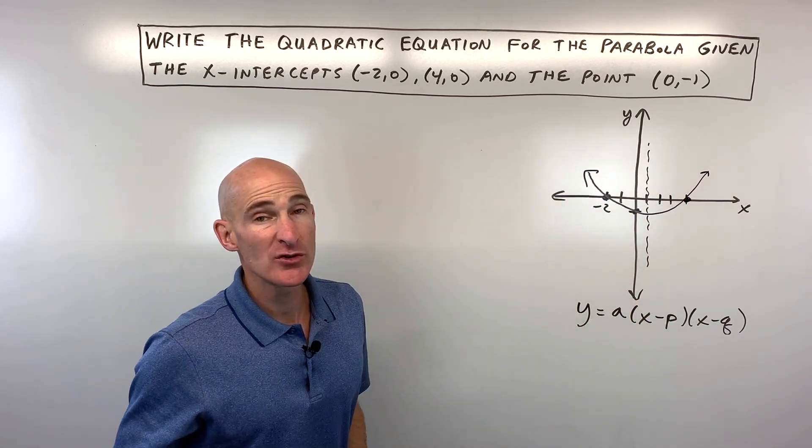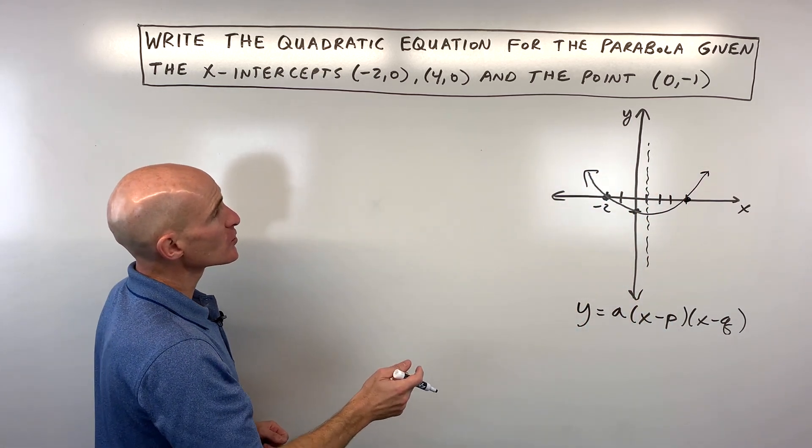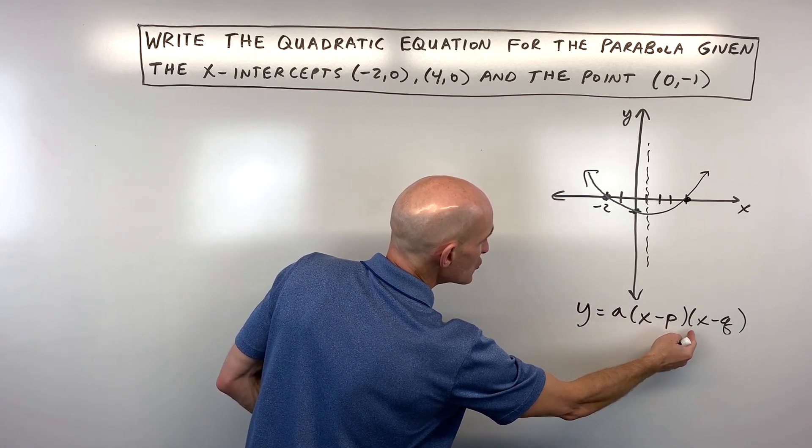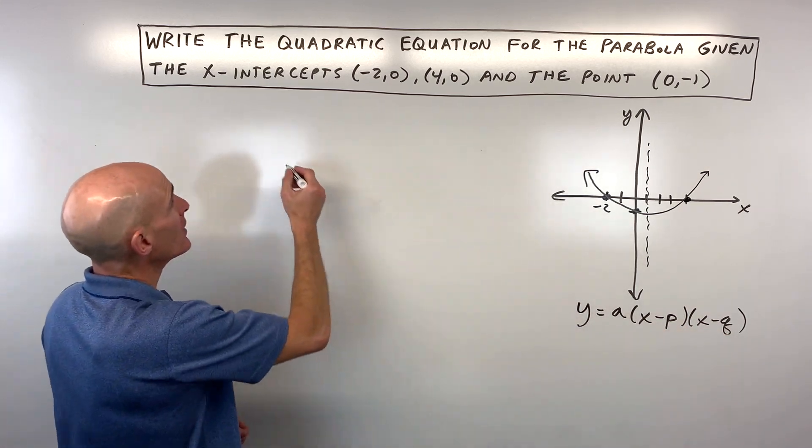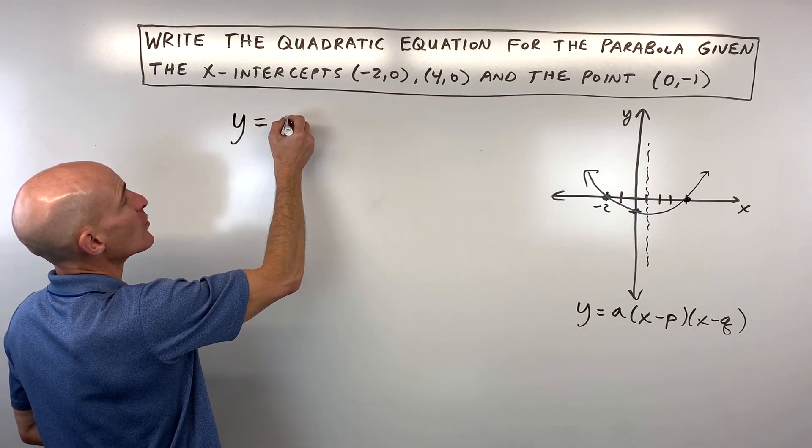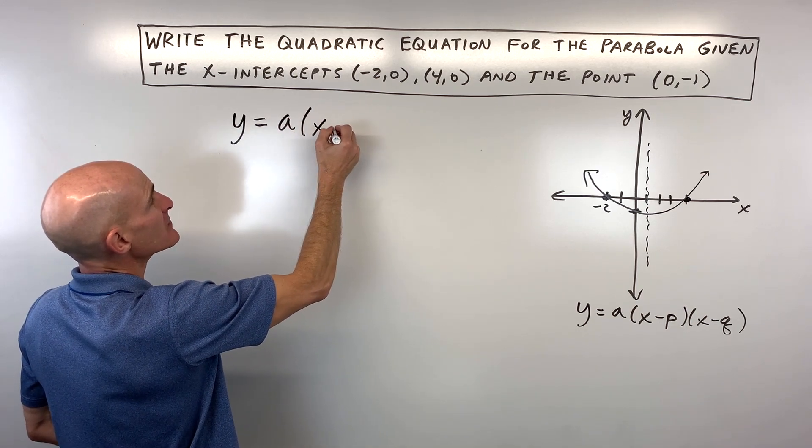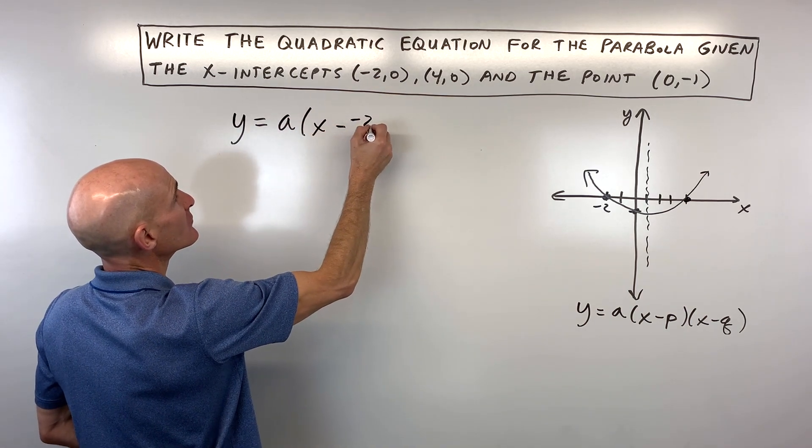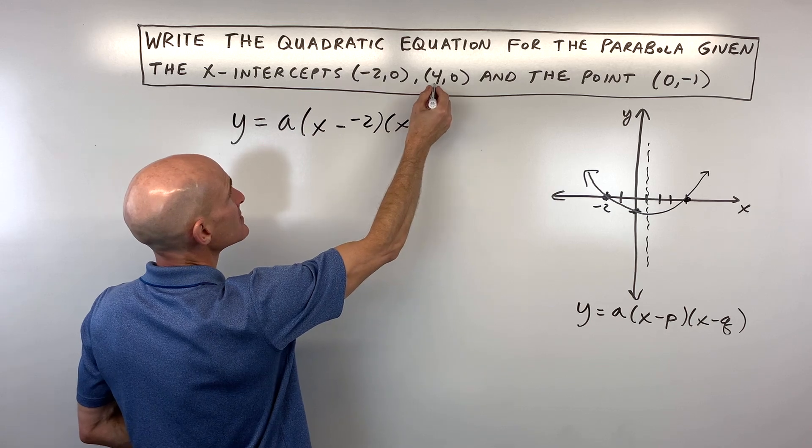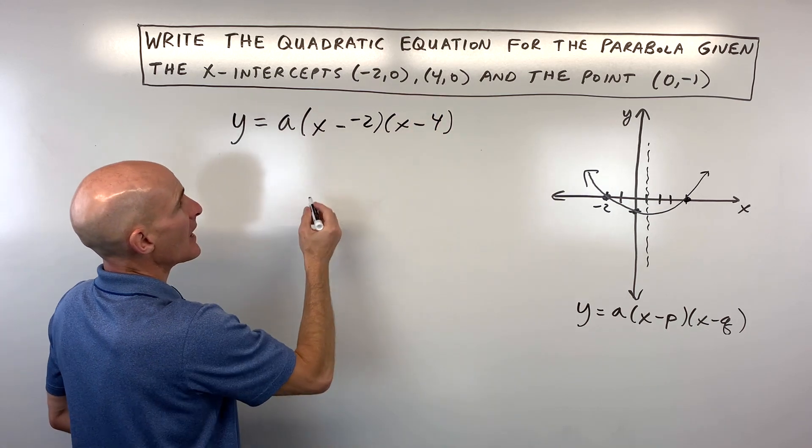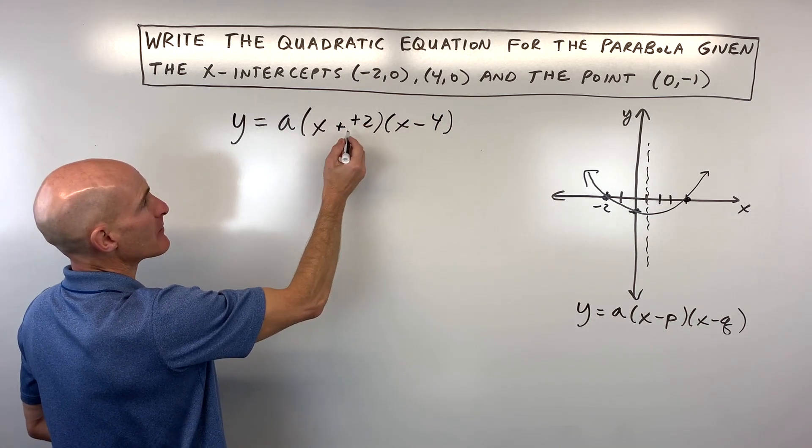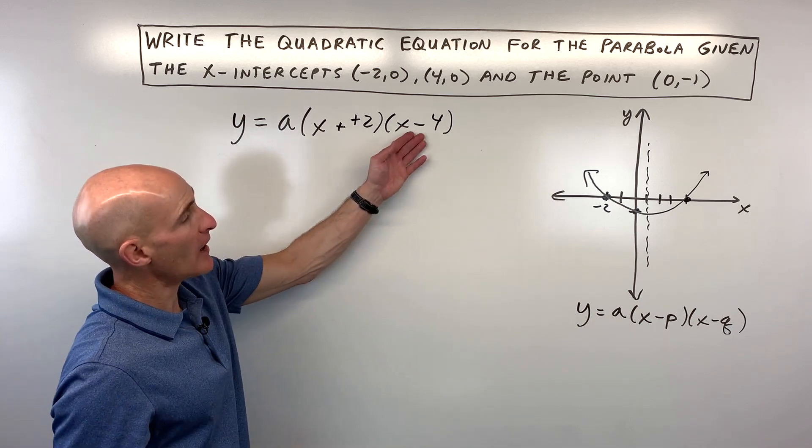Okay, but what we want to do is we want to get the equation. So what we're going to do is we're going to substitute in our two x-intercepts for p and q. So the way that looks is y equals a times x minus negative 2 times x minus positive 4. And when you subtract, it's like adding the opposite. So this is really like x plus 2, x minus 4.